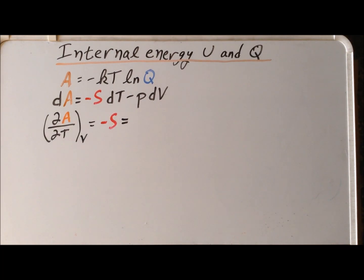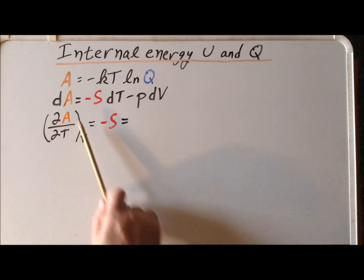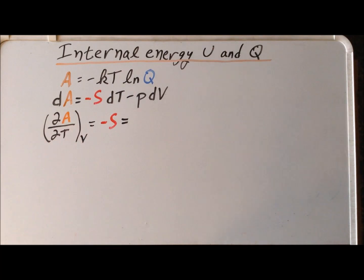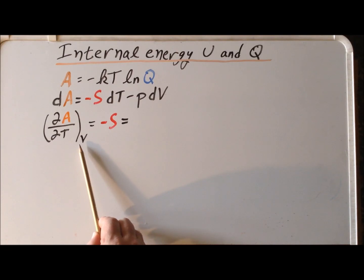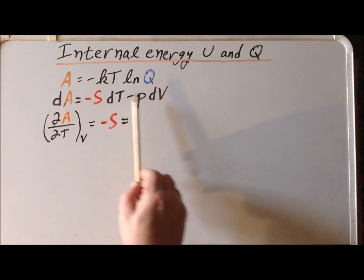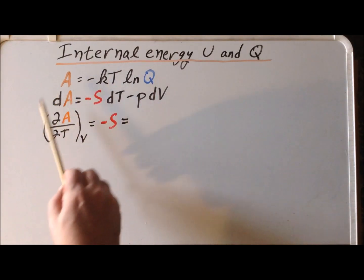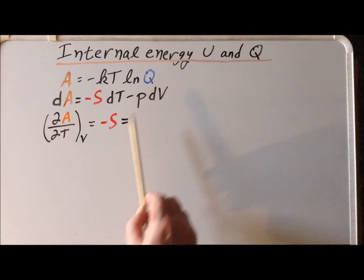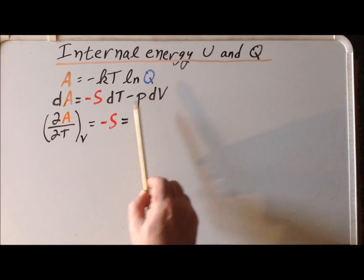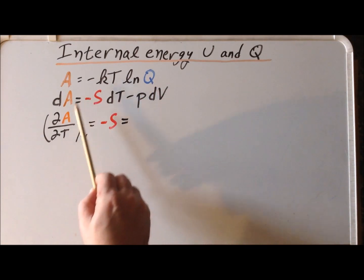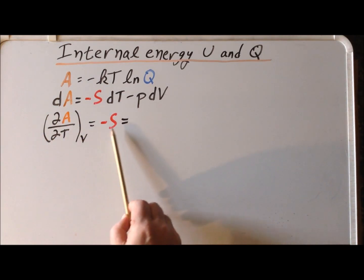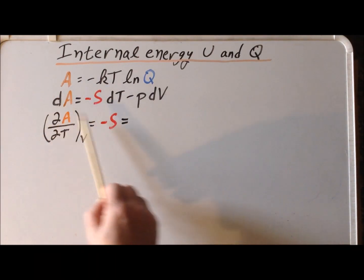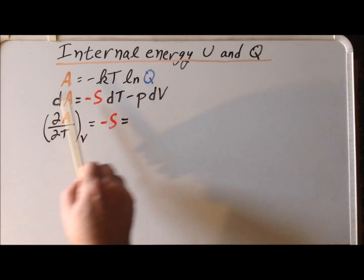Next we want to find the derivative of the Helmholtz energy A with respect to the temperature, keeping the volume constant. We can get it from this expression — if the volume is constant then dV is equal to zero, so we simply have that this derivative is minus the entropy.